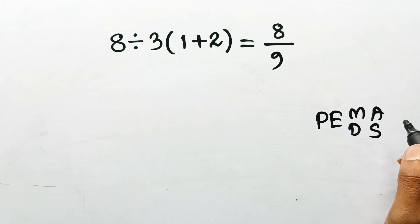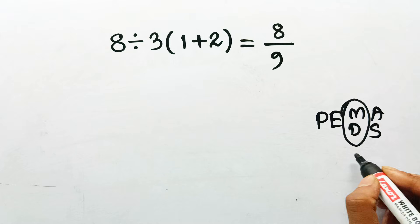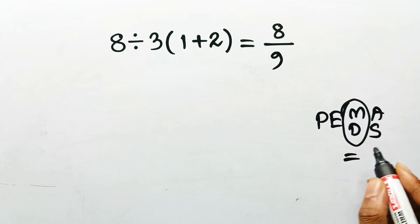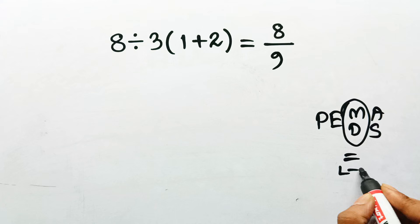And here's the part everyone thinks they know, but clearly doesn't. Multiplication and division have equal priority. Neither one goes first, they're equals, which means we go left to right.